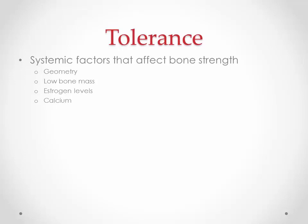Let's look at the tolerance end — everybody's individual. There could be systemic factors that affect bone strength. The geometry of their bone matters: they may have a small moment of inertia, making their overall bone weaker — we call those slender bones. They could have low bone mass for many reasons. For young females, low estrogen levels or a delay in puberty can decrease bone mass. Calcium levels and vitamin D also matter. Hormones, nutrition, and minerals could all affect the tolerance of their tissue.